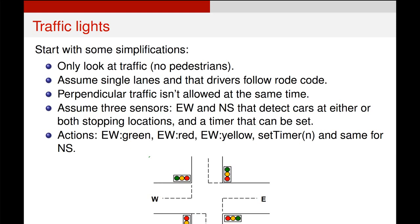So first I'm going to say we're not going to deal with pedestrians, we're going to assume single lanes, no perpendicular traffic. We've got three sensors, one for east-west, one for north-south and a timer, and we've got a set of one, two, three, four, five, six, seven different actions. So three on the east-west lights, three on the north-south lights, and one to set the timer and wait for it to tick out.